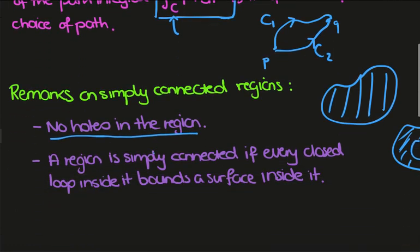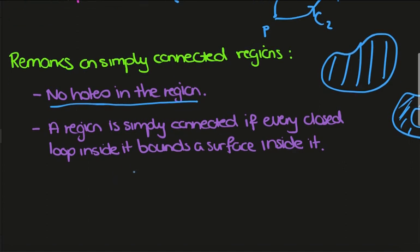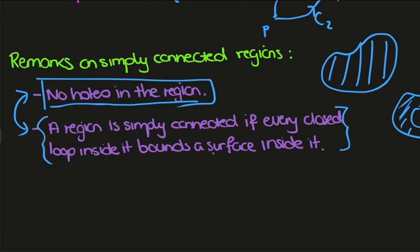Another way of interpreting simply connectedness, which will be useful in Stokes' theorem, is a region is simply connected if every closed loop inside the region bounds a surface inside it. So you can check that these are equivalent. This is of course the more intuitive one, but this may be more insightful when we are discussing Stokes' theorem.